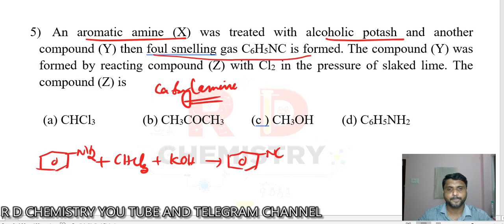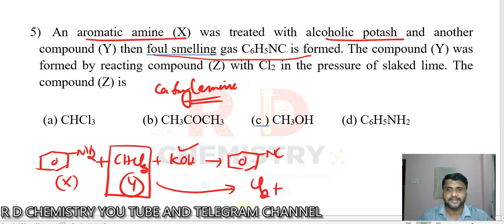This is X now, and alcoholic potash is already mentioned, and the another compound is Y. Chloroform is Y now. The compound Y is formed by reacting with chlorine and slaked lime. Slaked lime is calcium hydroxide. We should get chloroform CHCl3.